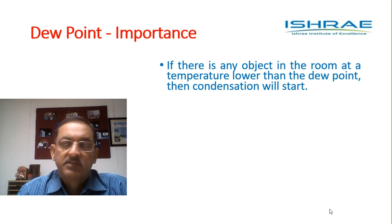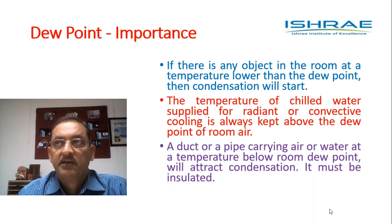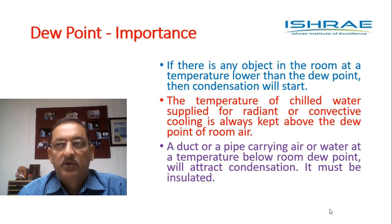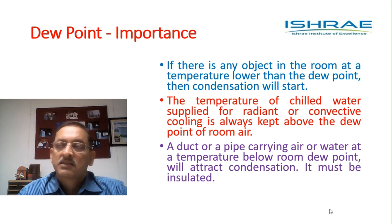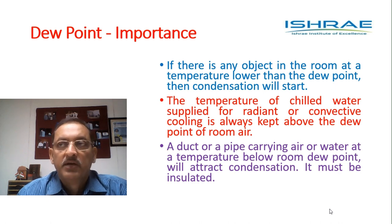If there is any object inside a room whose surface temperature is lower than the dew point, condensation will occur. It could be a duct carrying air or a pipe carrying water passing through a room. The key is not the inside temperature but the outside surface temperature — if the outside surface temperature is less than the dew point, condensation will take place. That is why it becomes necessary to have insulation around those pipes and ducts, so that the outer surface temperature is higher than the dew point.